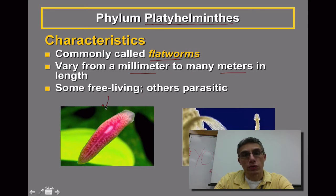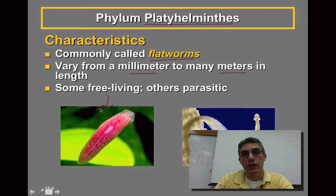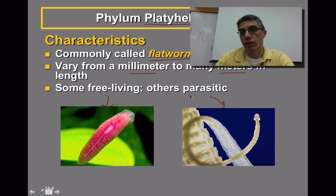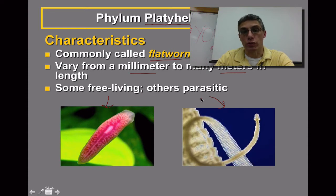The planarian shown here is similar to one you will look at in class and is considered a free-living type of flatworm. On the right-hand side, we have an example of a tapeworm, which would definitely be considered a parasitic type of flatworm. Another group in the parasitic category would be the flukes, which are also considered parasitic flatworms.